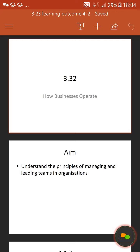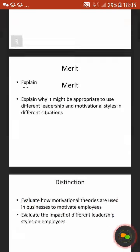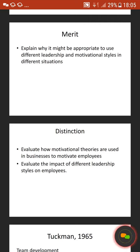Today we're going to go through 3.23 and the aim is to understand the principles of managing and leading teams in organisations. I'm going to go through the grading criteria. For a Pass, 4.1 states describe the stages of team development. For a Merit, it says explain why it may be appropriate to use different leadership and motivational styles in different situations. And then for a Distinction, it says evaluate how motivational theories are used in business to motivate employees, and evaluate the impact of different leadership styles on employees.